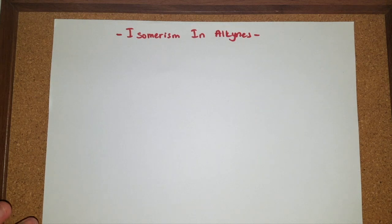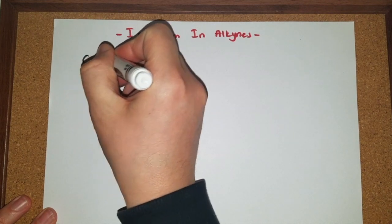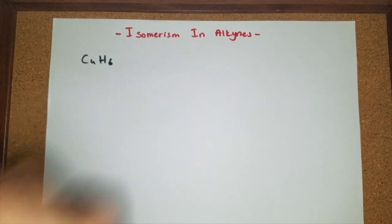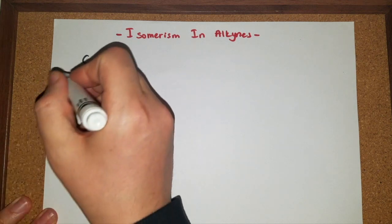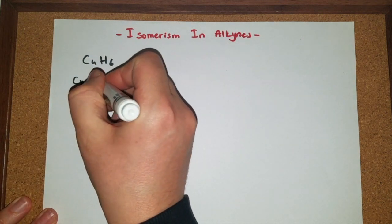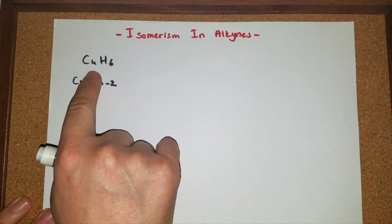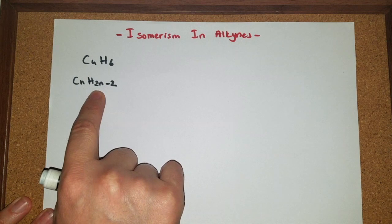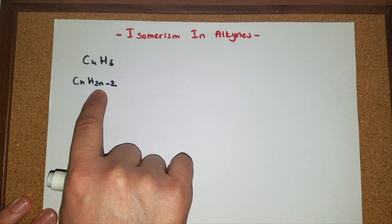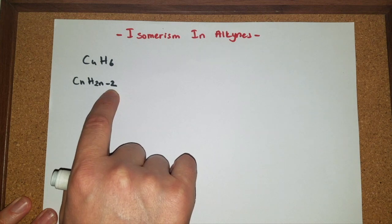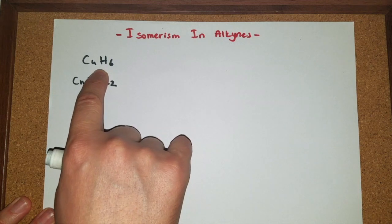Let's make some isomers having four carbon atoms and six hydrogens. As you remember, the general formula of alkynes is CnH2n-2. This molecular formula fits this general formula. We have four carbon atoms: 2n makes 8, minus 2 makes 6. So this compound could be an alkyne.